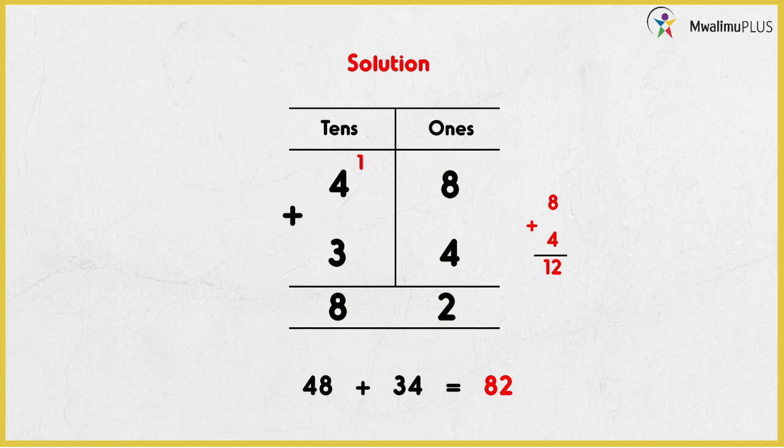We regroup 12 as 2 ones and 1 ten. The 2 ones — we write 2 below the digits 8 and 4, because we've added, so you write 2 in the ones column. Then you take the regrouped 1 ten to the tens place value. You write 1 above digit 4. It is red in color because we have regrouped it — it was not there before.